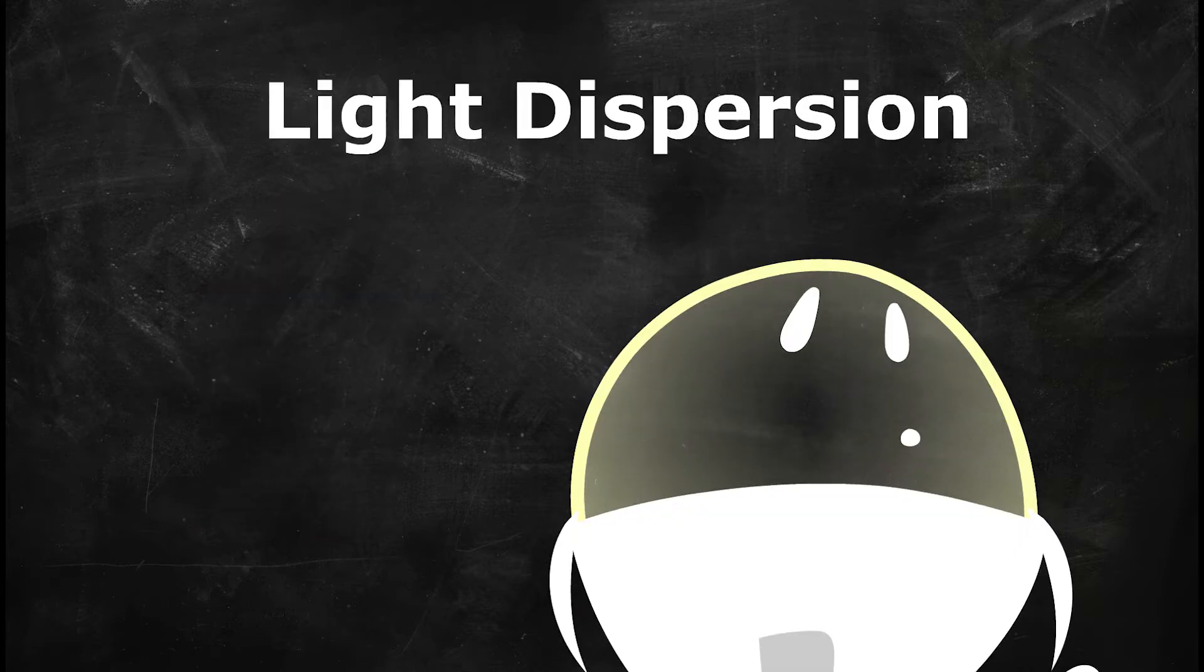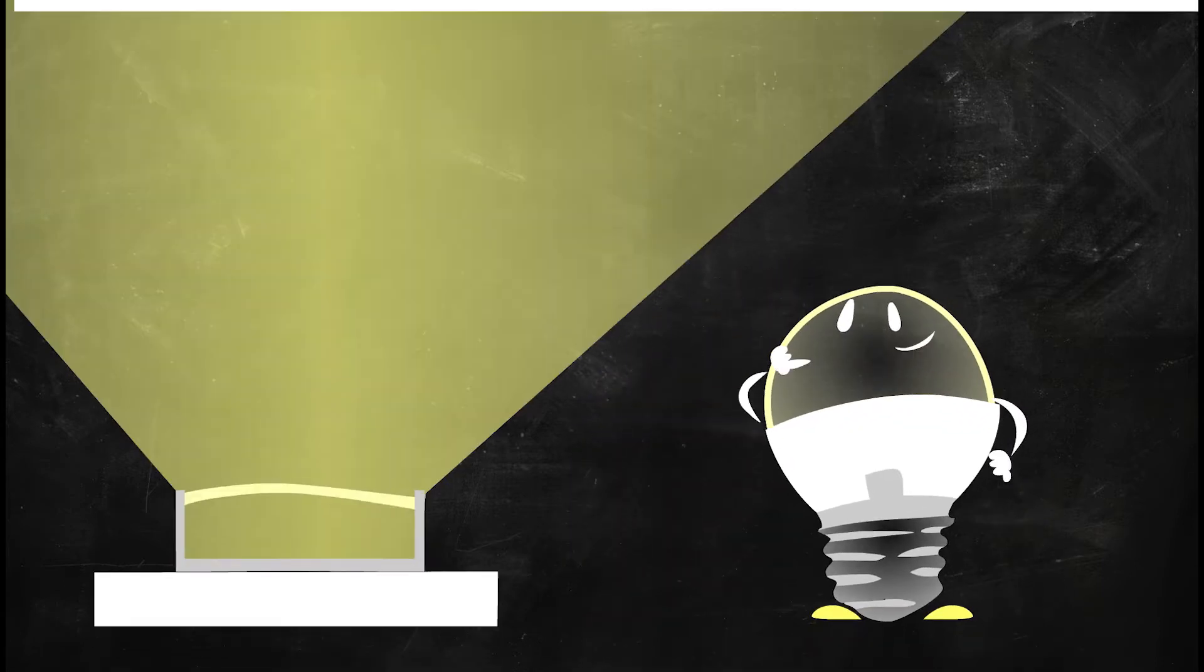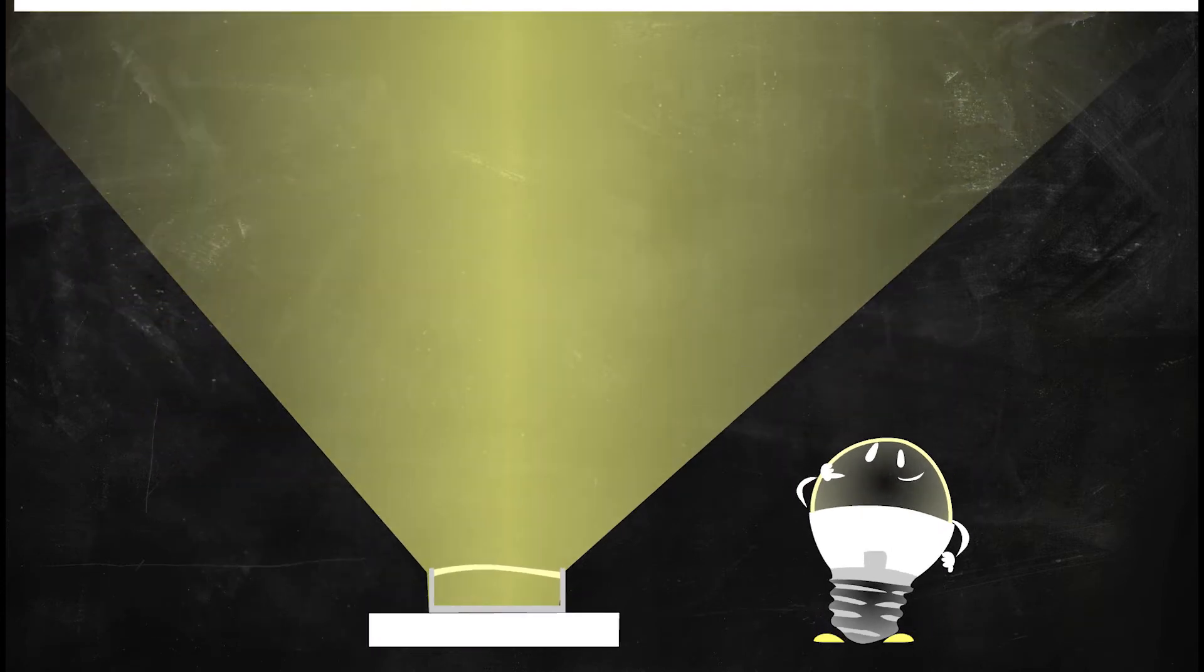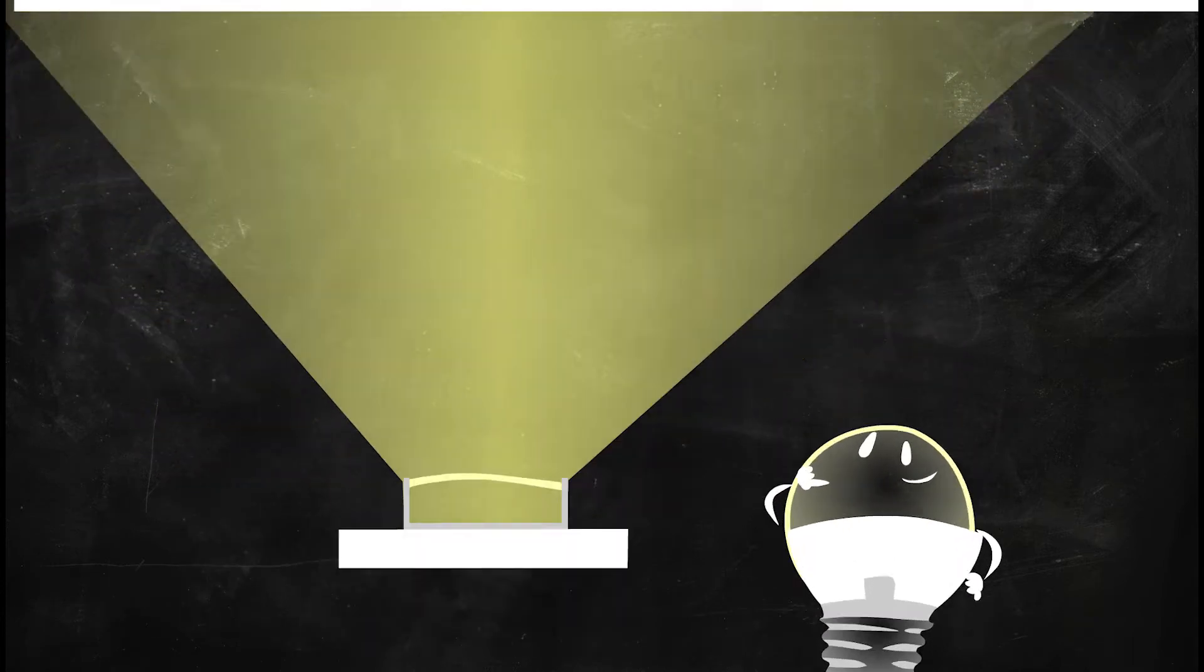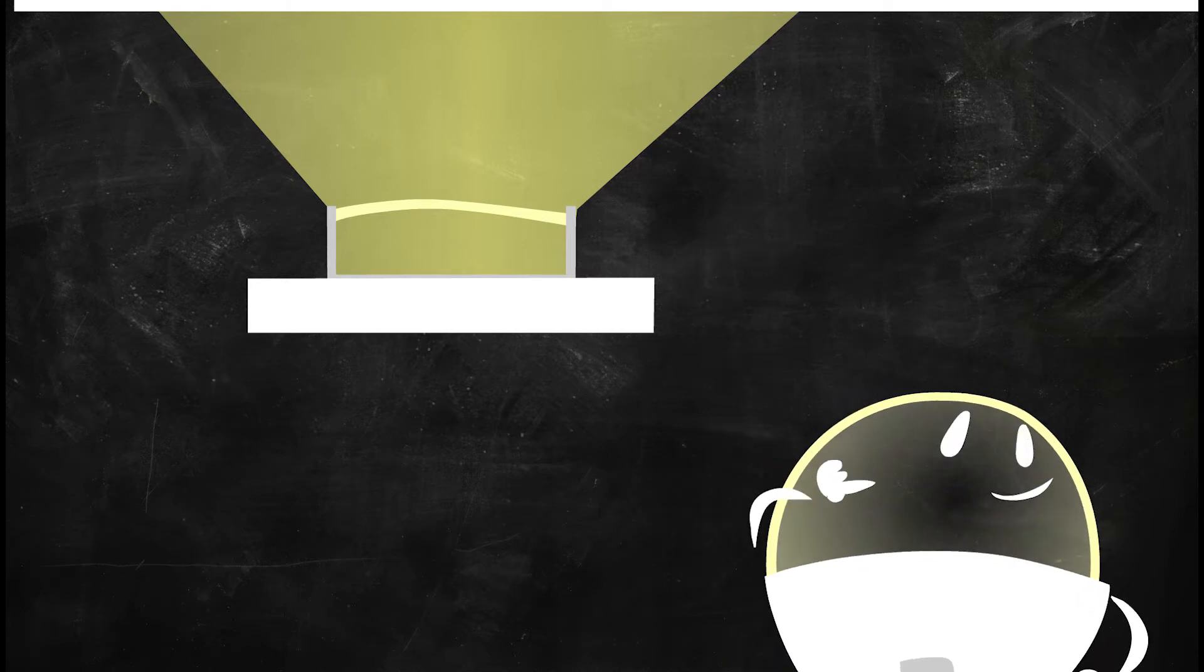Light dispersion is determined by the distance between the light and the ceiling. Leaving more space allows the light to project farther, whereas having less space creates a more intense, focused light.